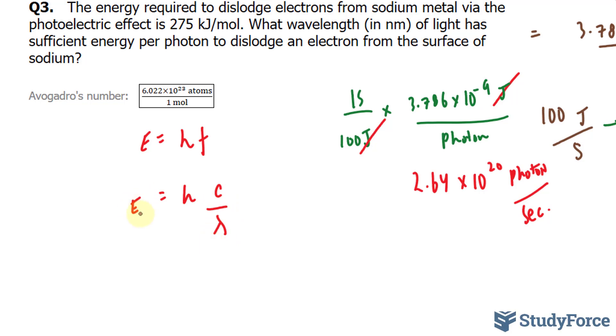Now we're told that 275 kilojoules per mole are required and we're looking for wavelength. So the first thing I'll do is multiply this number, 275 kilojoules per mole, by Avogadro's number. By doing that, the mole unit will cancel out because we want this exclusively in kilojoules.